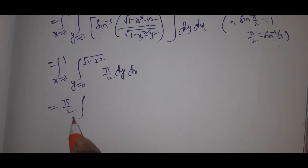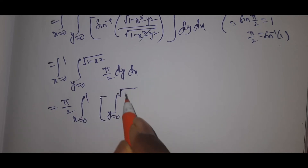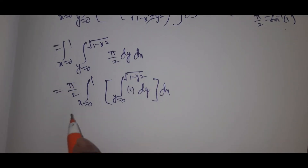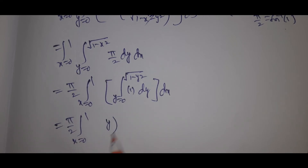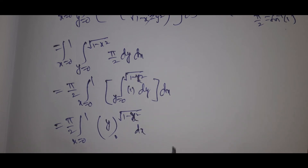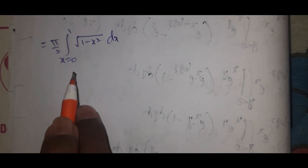Since π/2 is a constant, this becomes π/2 · ∫₀¹ ∫₀^√(1−x²) dy dx = π/2 · ∫₀¹ √(1−x²) dx. So we now need to evaluate ∫₀¹ √(1−x²) dx.